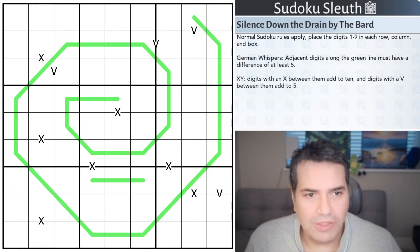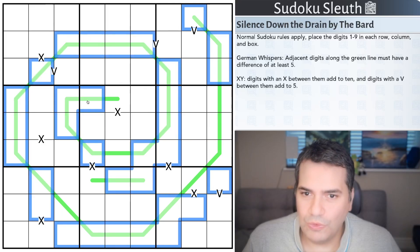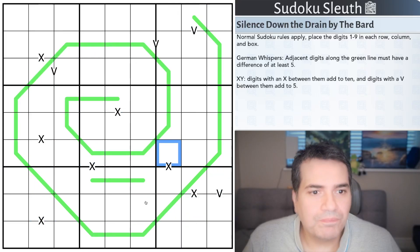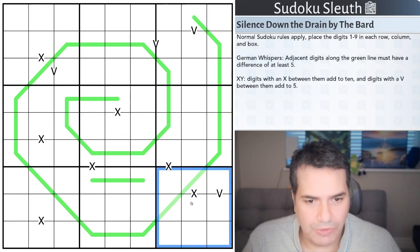So, Silence Down the Drain. Sounds a lot more ominous than the thumbnail that I actually created there. And you can see very much that you've got a whisper that's just all the way down the drain. Normal Sudoku rules apply: place the digits one to nine once each in every row, every column, every three-by-three box.